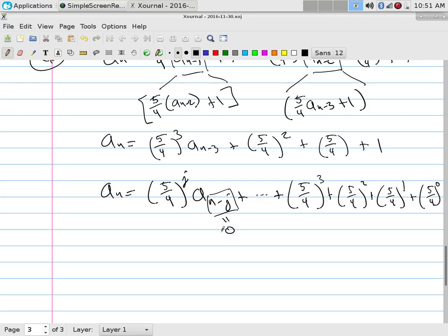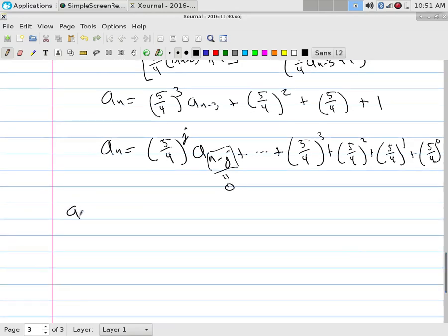And so that means that my formula looks like this: (5/4)^n times a_0 plus (5/4)^(n-1) plus and it keeps on going down - (5/4)^2, 5/4, (5/4)^0. So it goes down down down down.